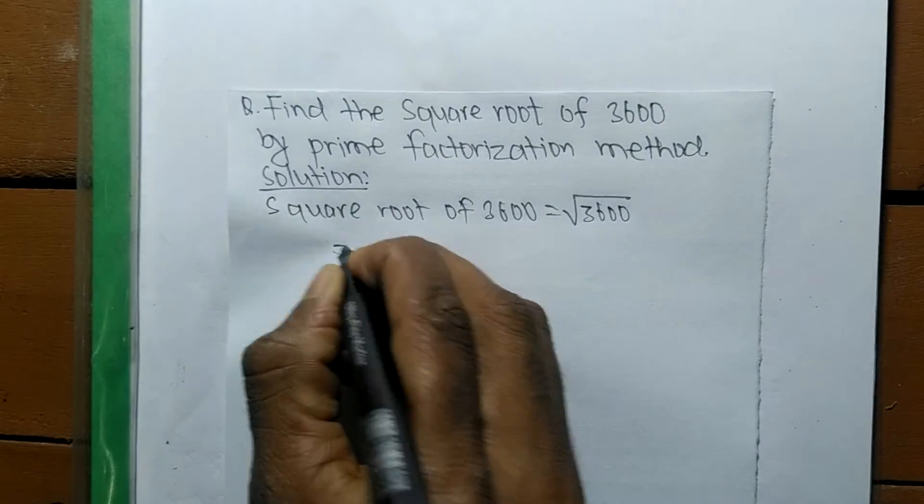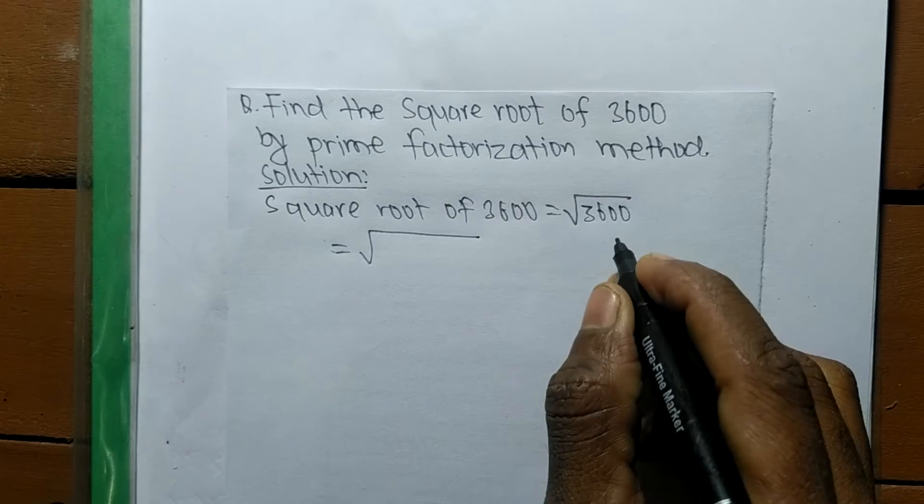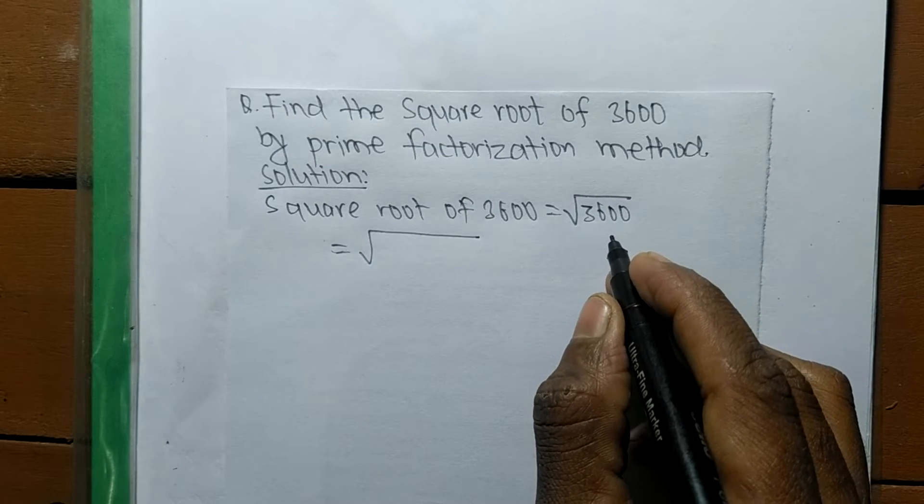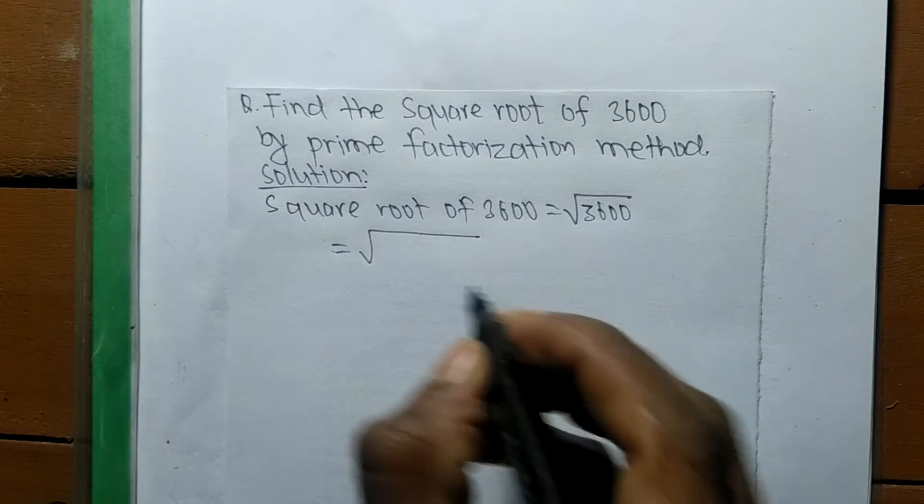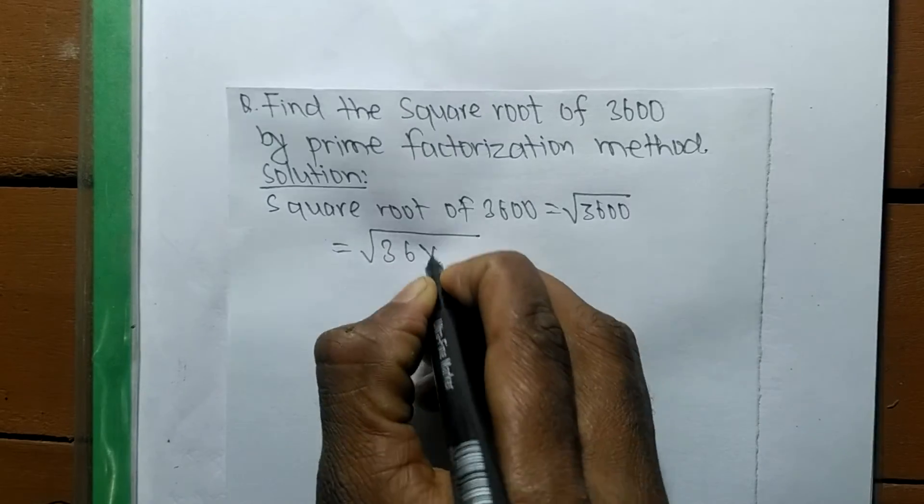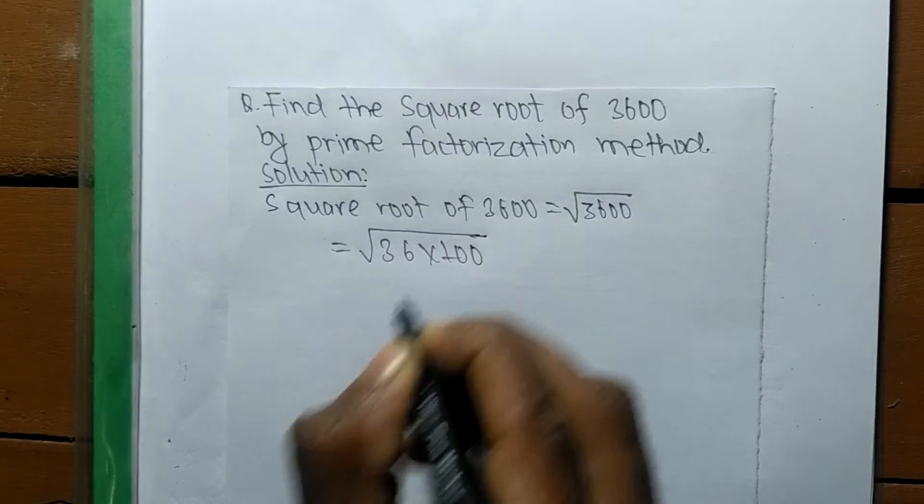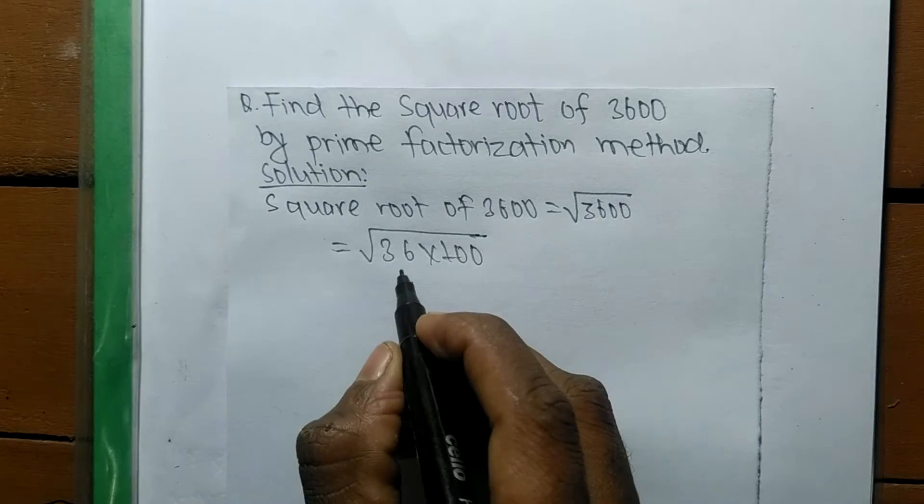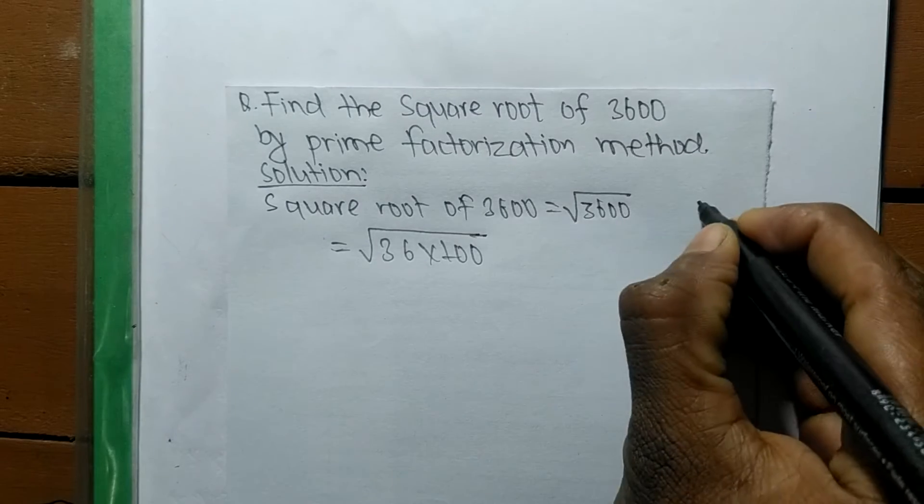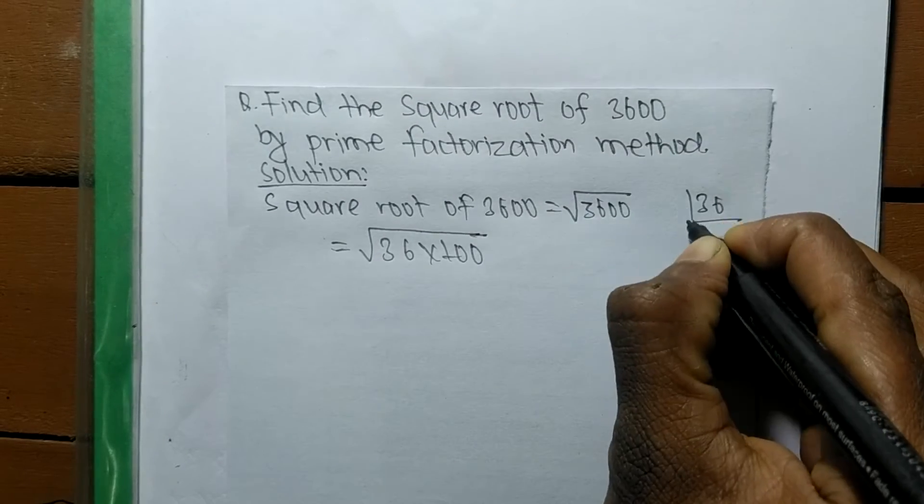When a number contains zeros, then we have to separate numbers and zeros separately. So it is equal to 36 into 100. Now we find out the prime factors of 36.